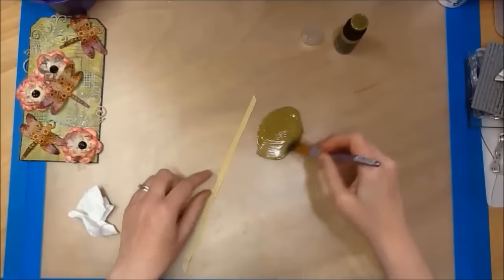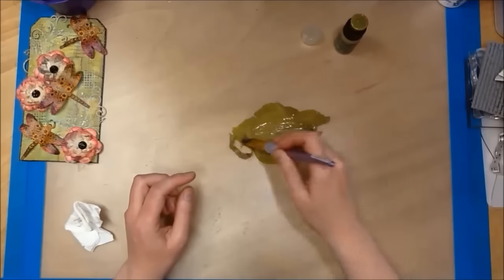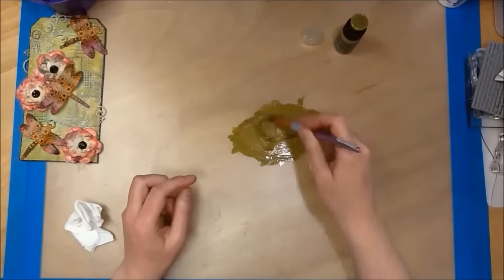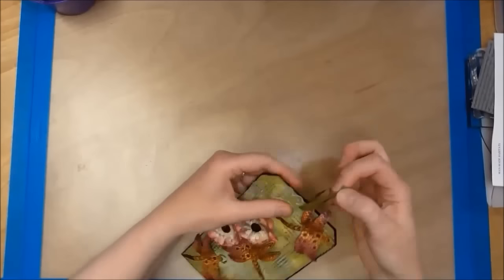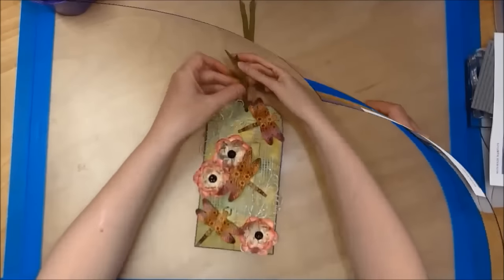So now I am using my Distress paint watered down to color my ribbon because I didn't have any in the right color. Once that was dried I then added the ribbon to my tag.